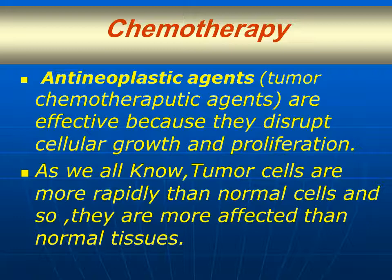Antineoplastic agents, or tumor chemotherapeutic agents, are effective because they disrupt cellular growth and proliferation. As we all know, tumor cells are more rapidly dividing than normal cells, and so they are more affected than normal tissues.